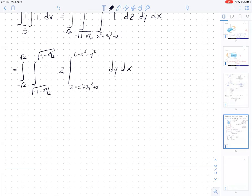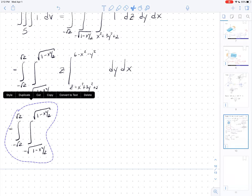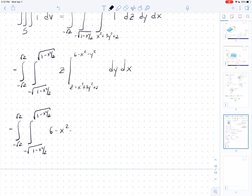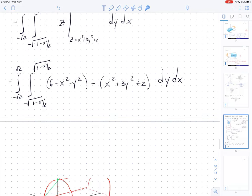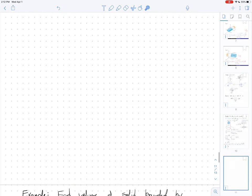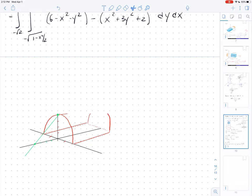I'm going to plug in my bounds and subtract everything out. I get 6 minus x squared minus y squared, subtract x squared plus 3y squared plus 2, dy dx. I want to pause right here and point out that if you were trying to compute this volume using a double integral, this double integral is exactly what you would have written down. We're saying the top curve minus the bottom curve, which is what we talked about in our last video series.